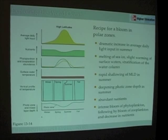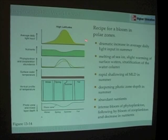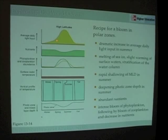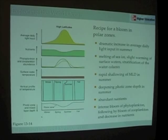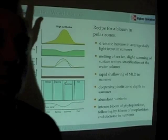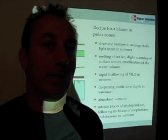In the spring, sunlight comes up. Sunlight in polar regions is basically six months of dark and six months of light. As that light begins to come up, it slightly stratifies the water column and also does some other amazing things.